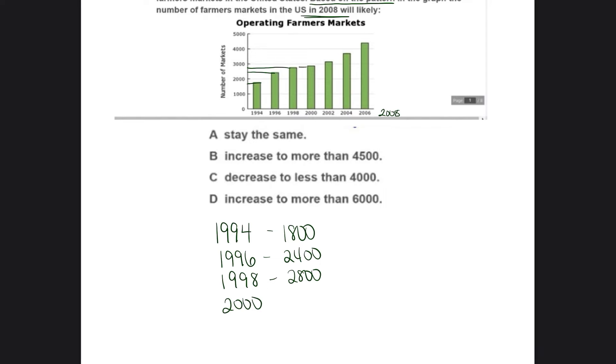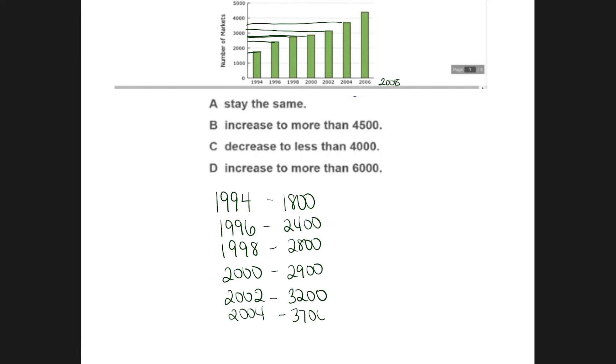In 2000, it was very close to that. So I'm going to say probably 2,900 farmers markets. In 2002, that looks like it's about 3,200 farmers markets. And I'm just estimating, I'm just guessing. 2004, it looks like there's about 3,700 farmers markets. And then in 2006, it looks like there's about 4,200 farmers markets.